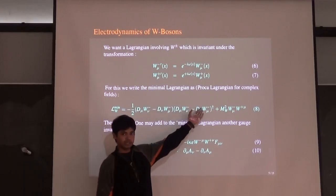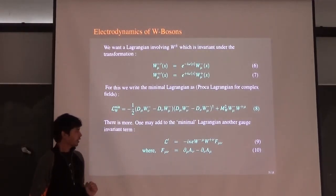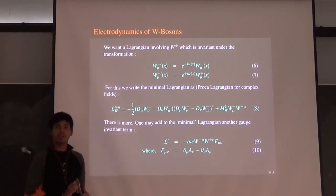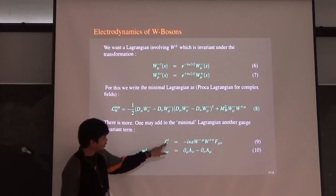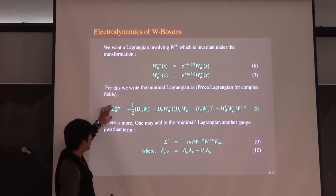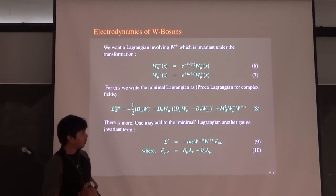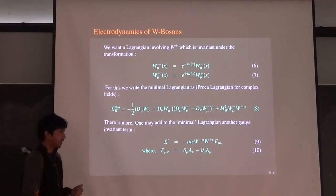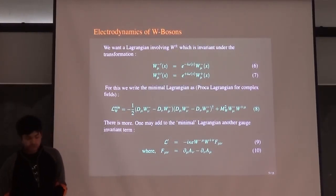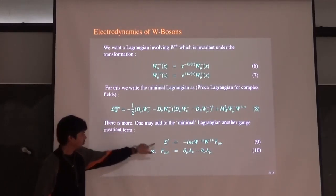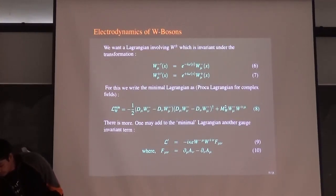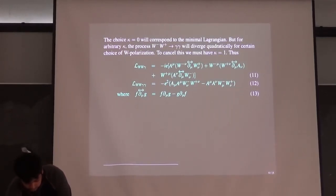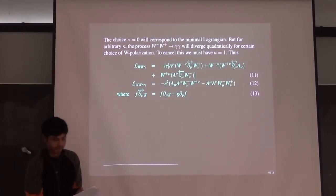If you notice carefully, there is one more term that I can write, because F-mu-nu is invariant under U(1) gauge symmetry, but this minimal interaction does not give me that term. So I introduce this term with an arbitrary factor kappa. I do not say anything about kappa a priori. Let's have an open mind. My Lagrangian will be L equals L-min plus L-prime. We will see what value of kappa we need to have good high-energy behavior, so that my scattering processes do not contain any energy growth.